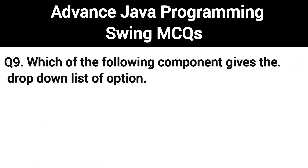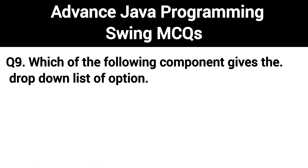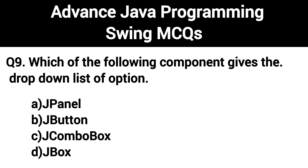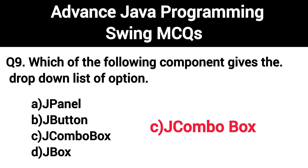Q9. Which of the following components gives the drop-down list of options? The right answer is Option C: JComboBox.